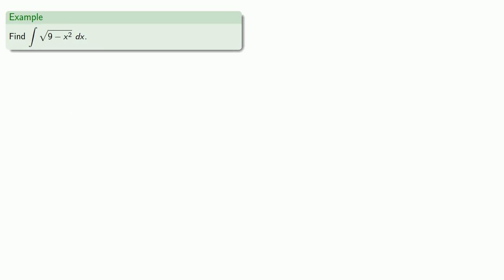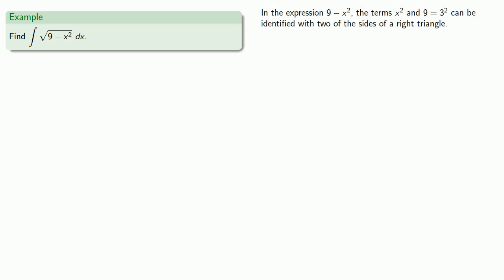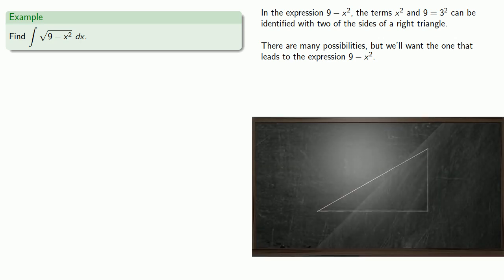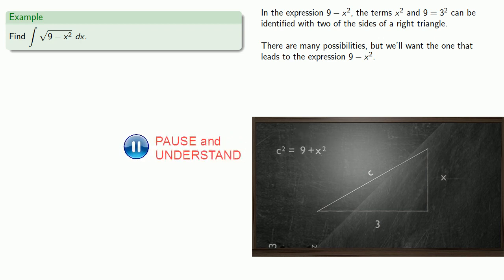Now consider the integral of the square root of 9 minus x squared. In the expression 9 minus x squared, the terms x squared and 9 — which is 3 squared — can be identified with two sides of a right triangle. There are many possibilities, but we'll want one that naturally leads to the expression 9 minus x squared. So we'll throw down x and 3 and see. If we apply the Pythagorean theorem in one configuration, that doesn't give us 9 minus x squared.